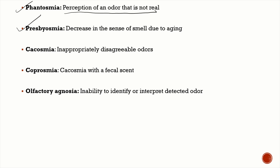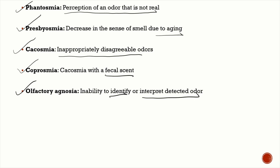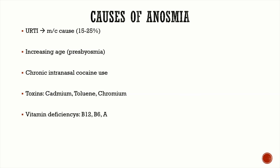Presbyosmia — just like presbyopia — is a decrease in the sense of smell associated with aging. Cacosmia is when the patient perceives bad smells or inappropriately disagreeable odors. Coprosmia is a type of cacosmia where the patient perceives a fecal scent. Olfactory agnosia is where the patient is able to tell there's some sort of odor but is unable to identify or interpret what type of odor it is.